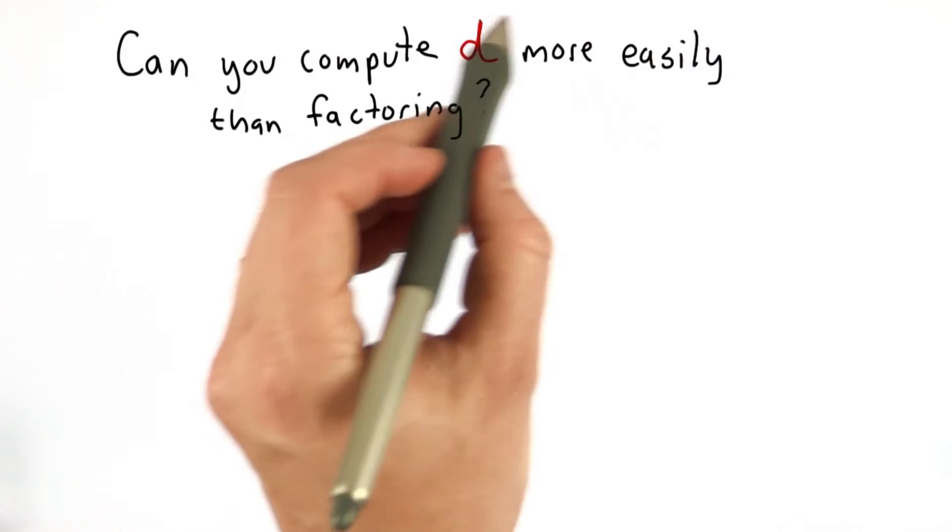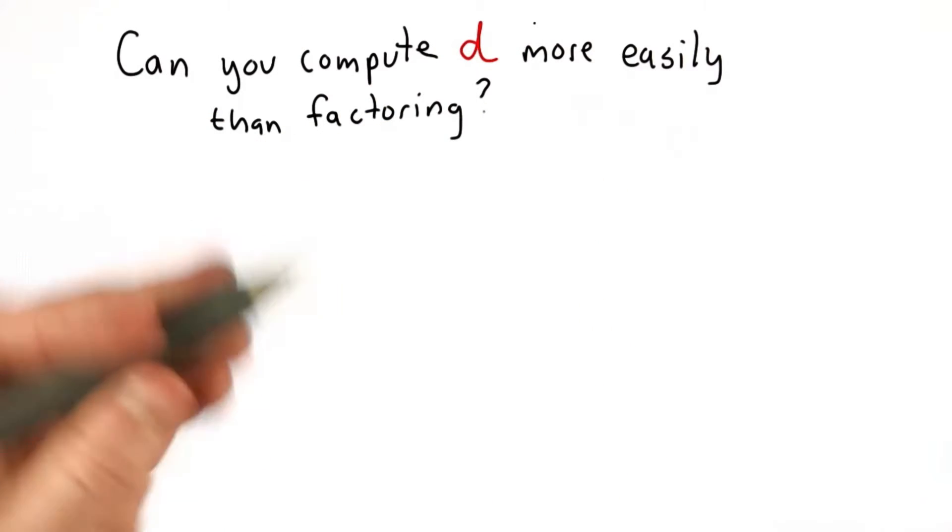The last thing we need to show is that there isn't an easier way to compute d than finding the factors of n.